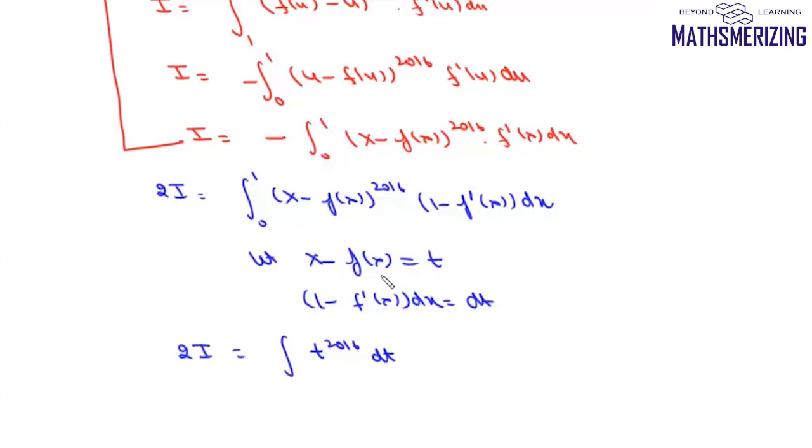Now we write the limits: at x=0, we have 0 - f(0) = -1, so the lower limit is -1. At x=1, the upper limit is 1. Solving this integral we get t^2017/2017, and putting the limits we get 2/2017. So the value of this integral is 1/2017, and that is the answer to this question.